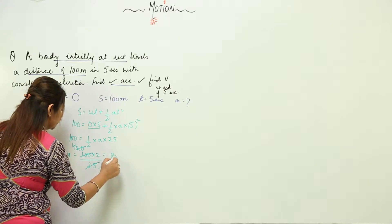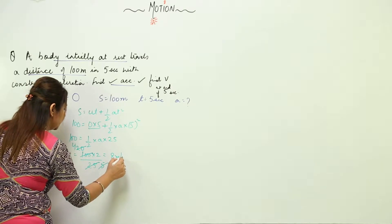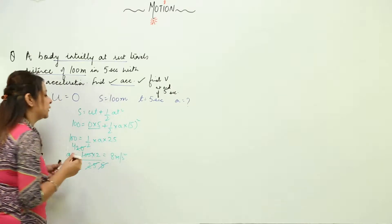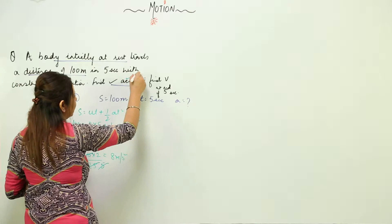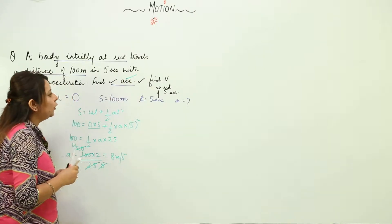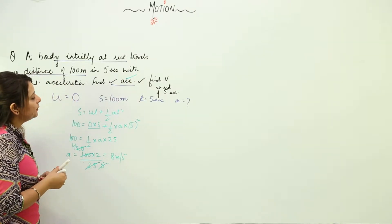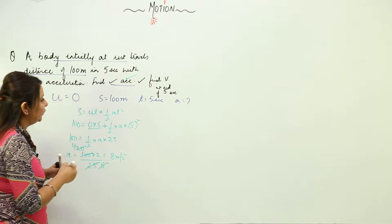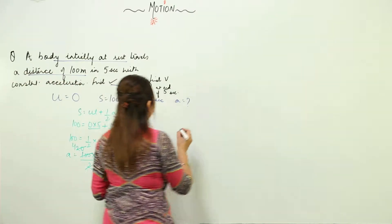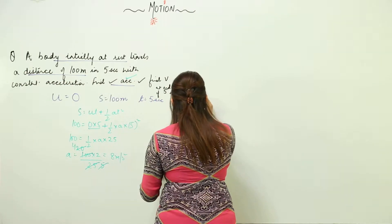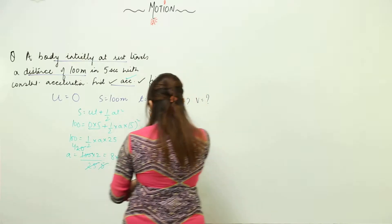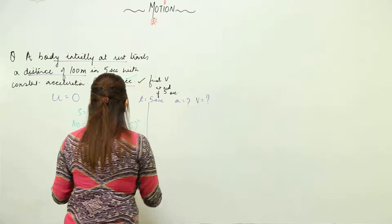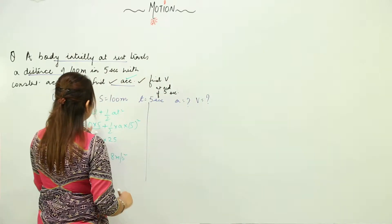It comes out to be 8 meters per second squared. So this is the first part. In the second part, you need to find the final velocity at the end of 5 seconds. Now we have the acceleration as well.